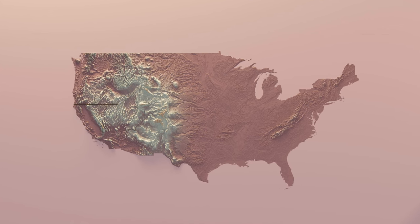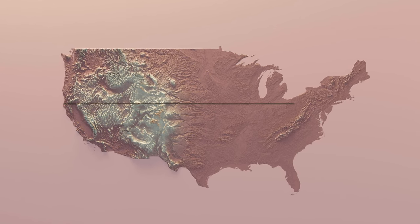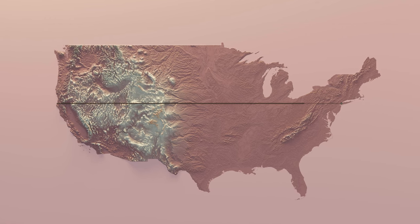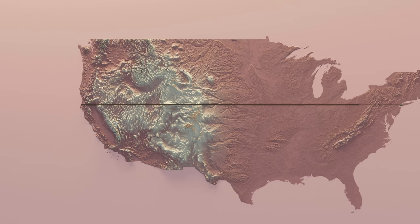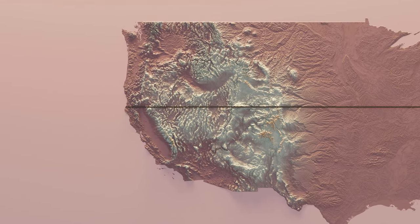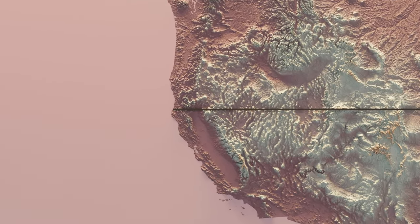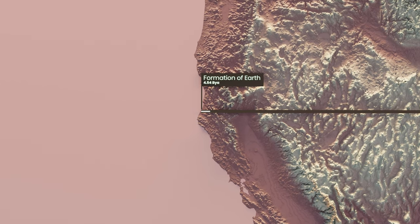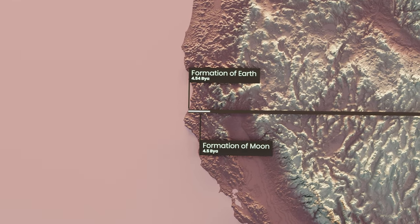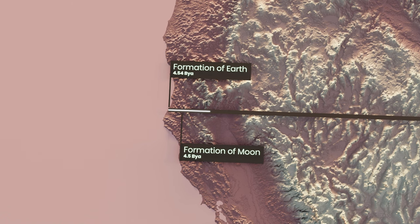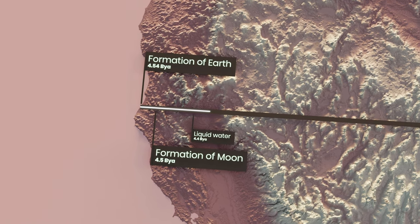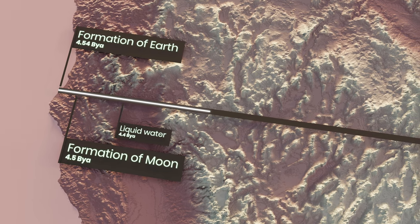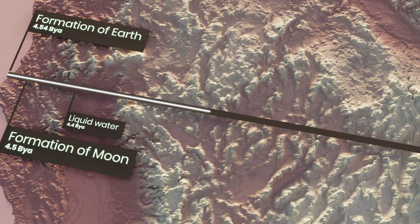Imagine taking a conterminous map of the United States and drawing a line across it from Eureka, California to New York City. Let this line represent the history of the Earth. It would start at the creation of the Earth some 4.5 billion years ago. Moving eastwards, the formation of the moon would be the next major stop around 50 million years later. 100 million years after that, liquid water would form for the first time on Earth's surface, the temperature having cooled sufficiently to allow it to collect.